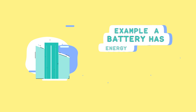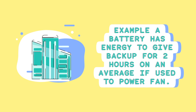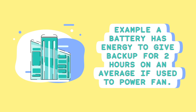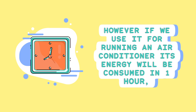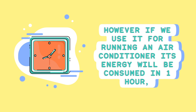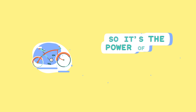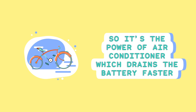For example, a battery has energy to give backup for 2 hours on average if used to power a fan. However, if we use it for running an air conditioner, its energy will be consumed in 1 hour. So it's the power of the air conditioner which drains the battery faster.